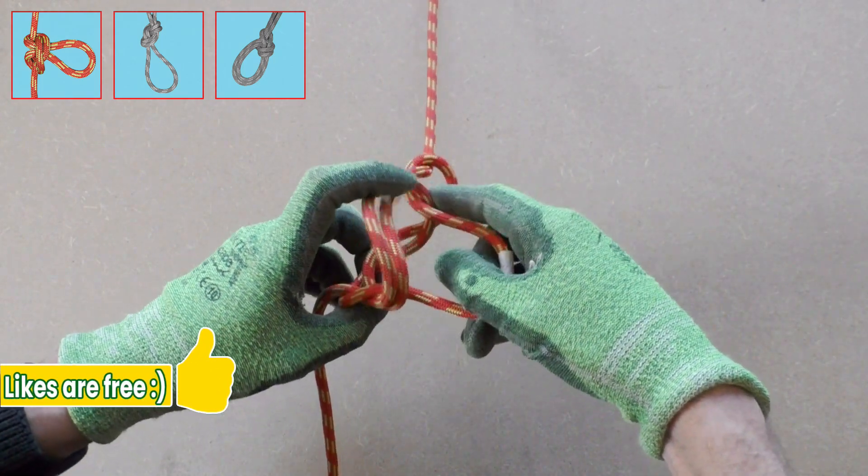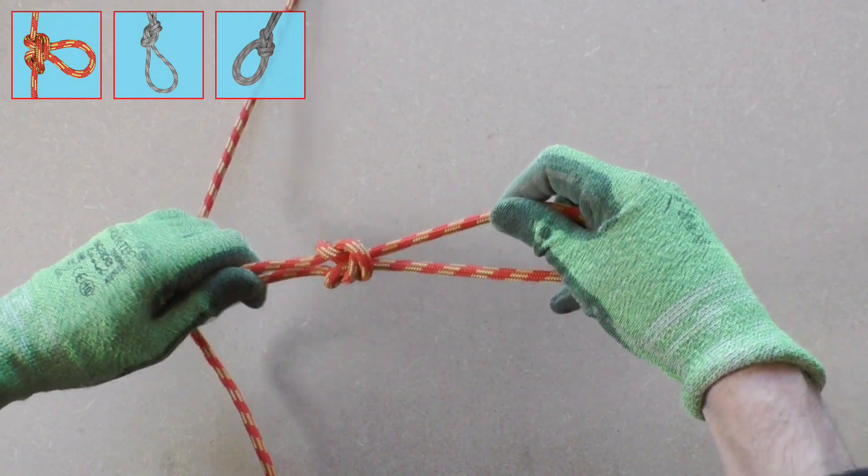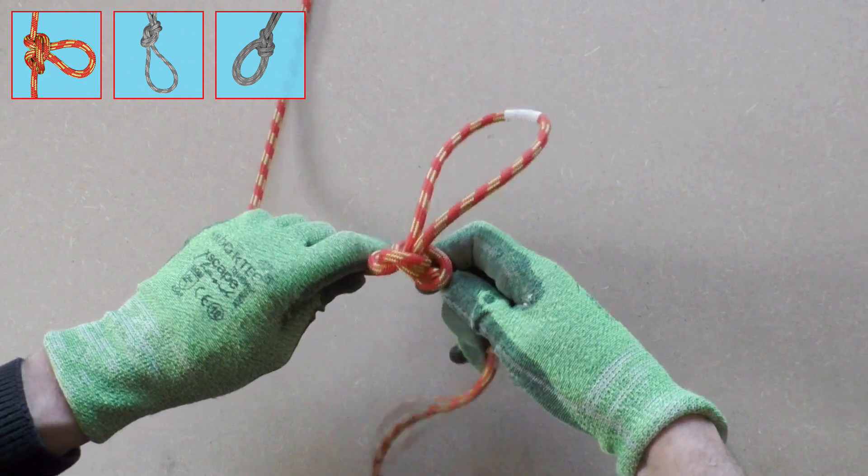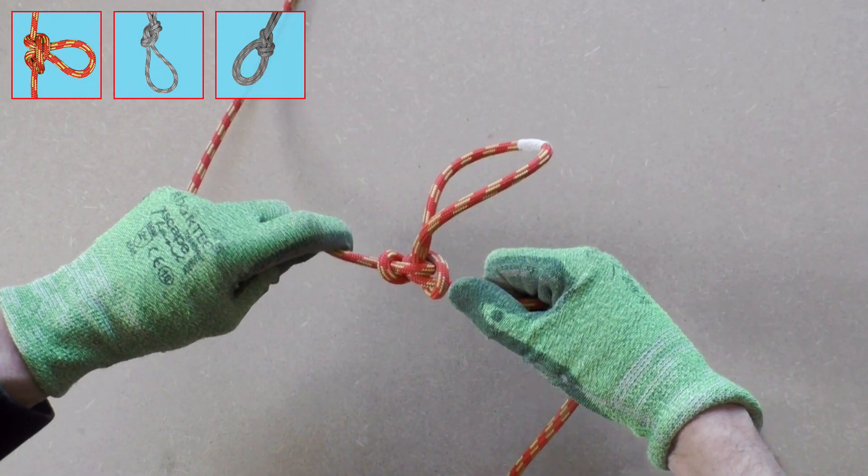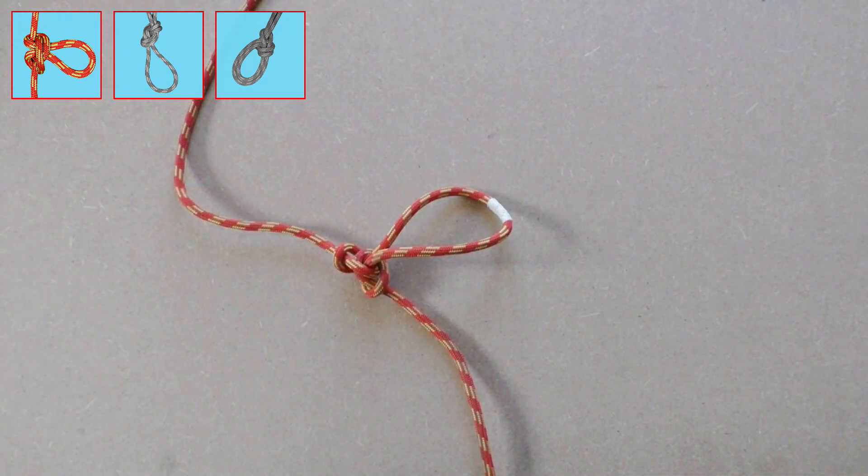Dress the alpine butterfly knot properly and then set it. The alpine butterfly loop is a quick and simple method to form a loop in the middle of the rope. The alpine butterfly loop is also safe to climb on.